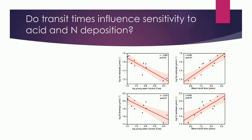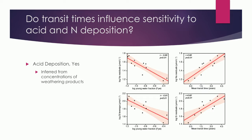Do transit times influence sensitivity to acid and nitrogen deposition? Looking at the graphs with mean transit time on the x-axis and weathering products — sodium concentrations and silica concentrations — on the y-axis, there is a positive correlation between transit time and those weathering products, indicating those catchments have substantial buffering capacity. So for acid deposition, the answer is yes. For nitrogen deposition, not so much — there is not a strong correlation between nitrate concentrations and transit time metrics.